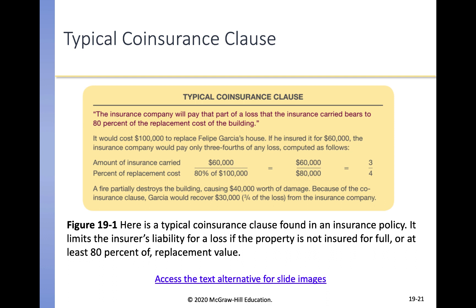Here's a typical co-insurance clause: the insurance company will pay that part of a loss the insurance carried bears to 80% of the replacement cost of the building. For example, Felipe Garcia's house costs $100,000 to replace, but he only has $60,000 of insurance. The insurance company pays only three-quarters of any loss, since $60,000 divided by $80,000 (80% of $100,000) equals three-quarters. So if a fire partially destroys the building causing $40,000 worth of damage, Garcia would recover $30,000 from the insurance company.